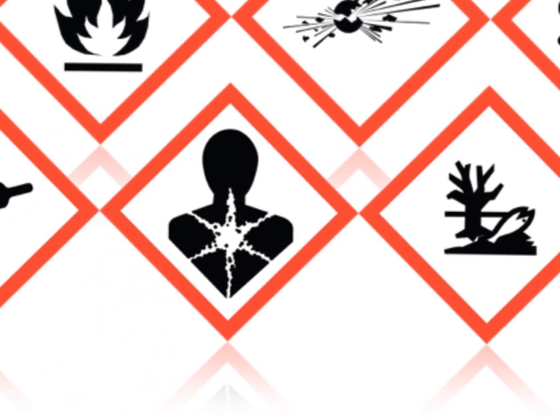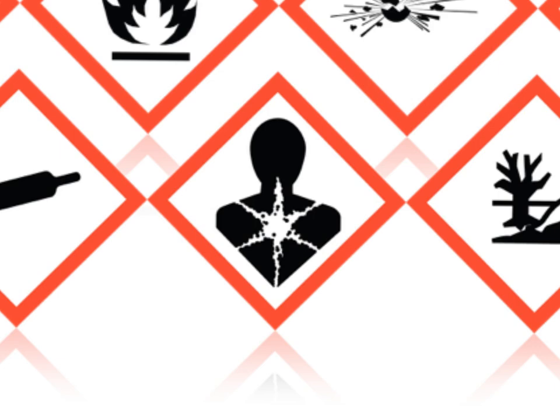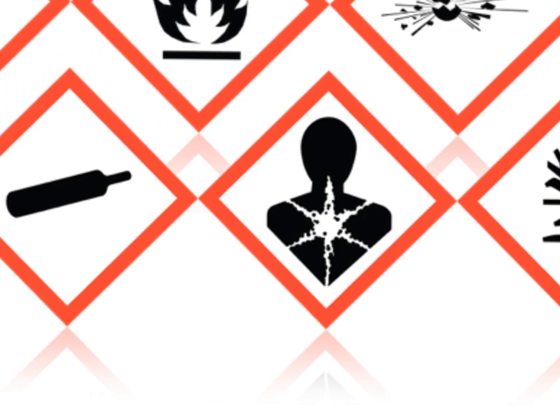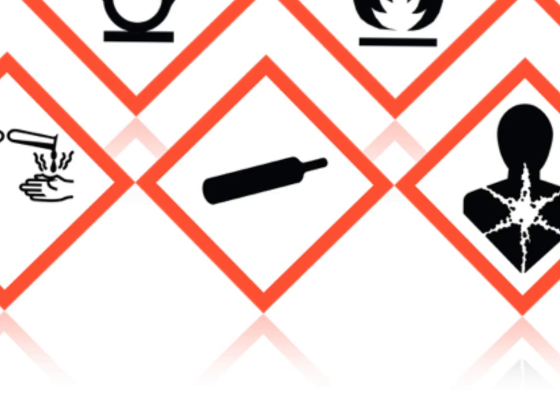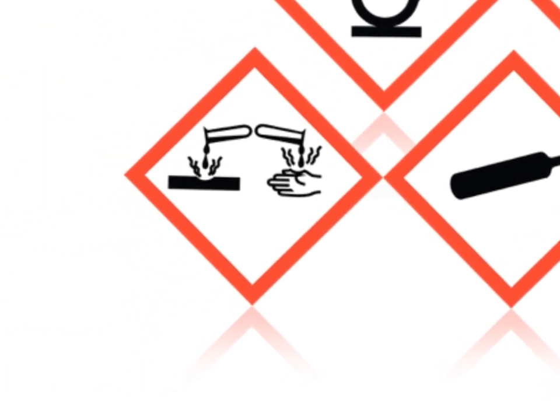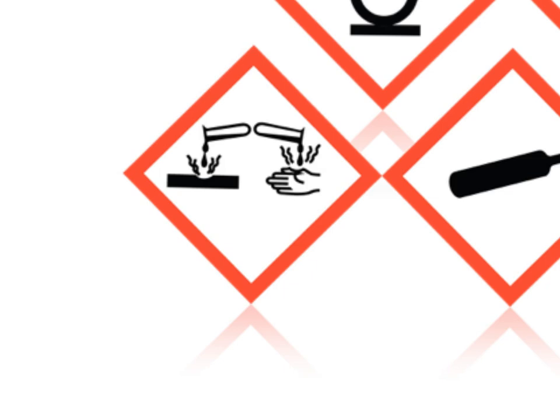The next pictogram appears to be a person dissolving. This label is placed on materials that are carcinogens or have mutagenic properties. Next up appears as a gas cylinder. This label is placed on gases that are under pressure. Damage to a container with this label could cause a very destructive explosive rupture. The final pictogram appears as test tubes dripping onto a hand and a line. This label will be placed on materials that are corrosive to metals or materials that cause skin burns and/or eye damage.